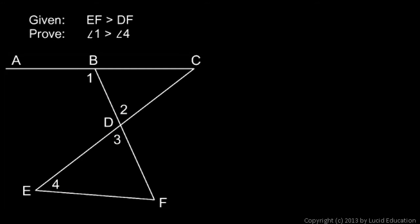If you're not sure where to start in a proof, a good place to start is always with the given information. We're only given one thing here — EF is greater than DF. So Step 1: EF is greater than DF. The reason I know that's true is because it is given.